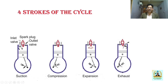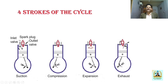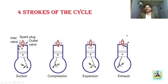The last one is the exhaust stroke. During the exhaust stroke, the piston again moves from BDC to TDC. The inlet or suction valve is in the closed position, but the exhaust valve is in the open position. As a result, as the piston moves from BDC to TDC, the burnt air-fuel mixture, which is no longer capable of producing any more power, is expelled to the surroundings through the exhaust valve.